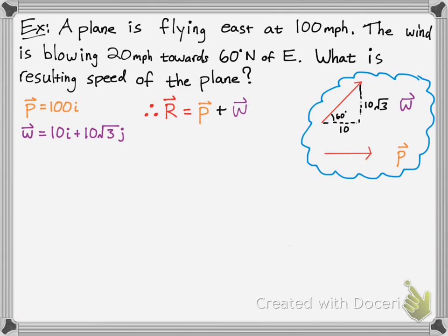Now we want to add the two vectors together. You simply do just that. You take your P vector, 100i, and then you add your W vector for the wind. You simply add the same components: 100i plus 10i is 110i, plus 10 radical 3j. You simply added the components to get your resulting vector.